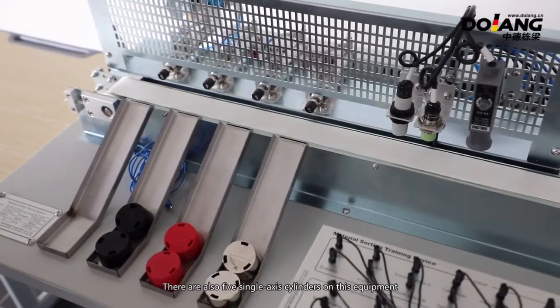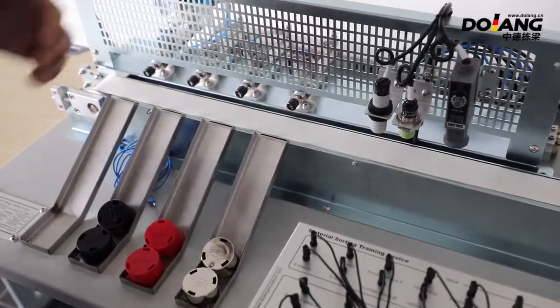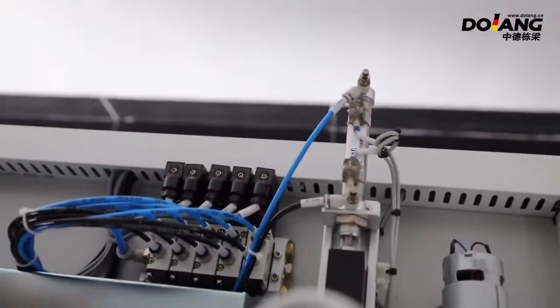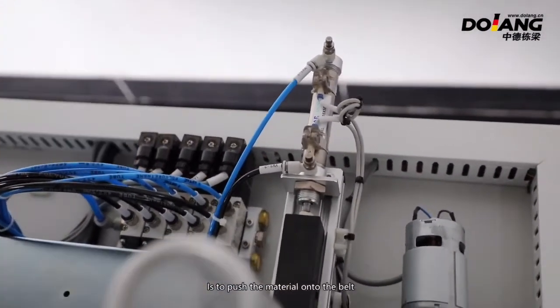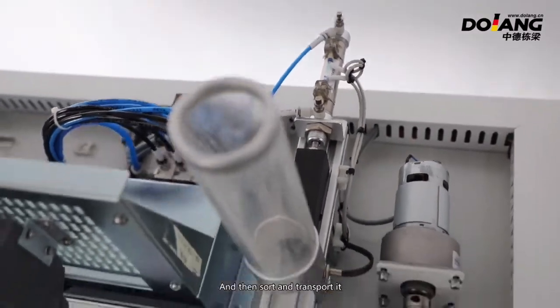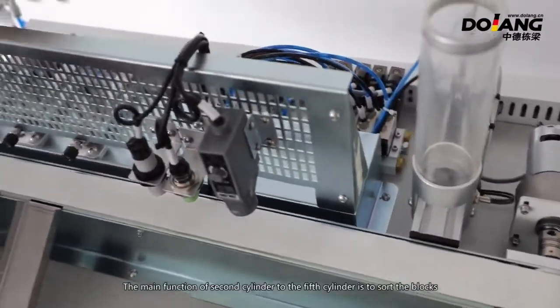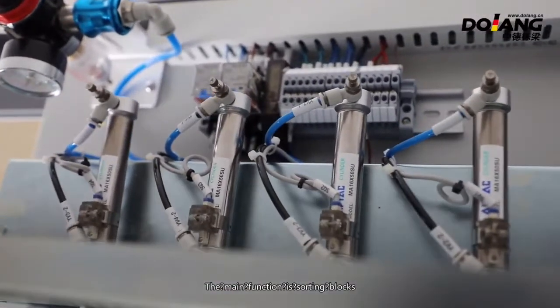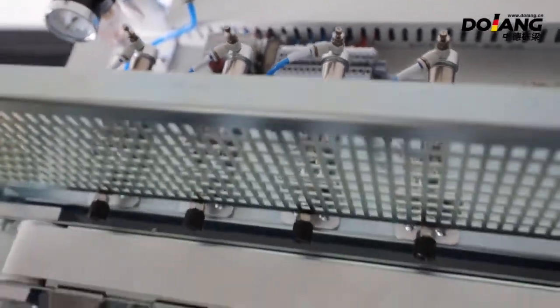There are also five single-axis cylinders on this equipment. This is the first cylinder. Its function is to push the material onto the belt and then transport it. The main function of the second cylinder to the fifth cylinder is to sort the blocks.